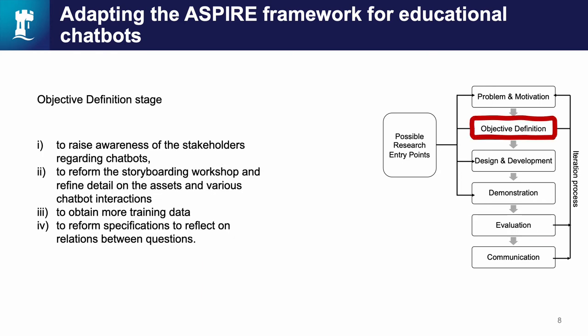That led us to the second iteration of the design science approach. A set of objectives for the framework were identified to fit the development of educational chatbots. The first objective was to raise awareness of stakeholders regarding chatbots, since participants in a participatory workshop to co-design a chatbot usually have little or no experience of using chatbots and are unaware of their functionalities and capabilities. The second objective was to reform the storyboarding workshop, refining detail on the assets and various chatbot interactions, as the traditional storyboarding workshop with different screens proved to be non-functional and a graph-based workshop organized around themes and discussion could be more useful.